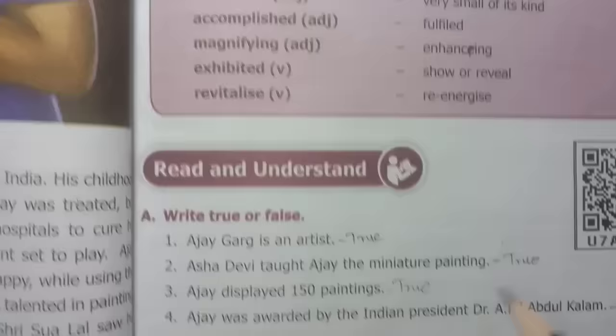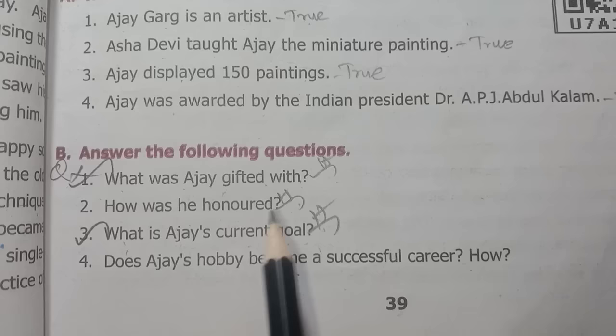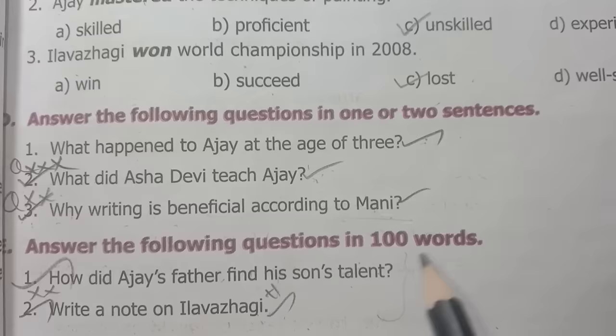Unit 2 Prose: Will Turn into Successful Career. In page number 37, choose the correct answer. In page number 39: What was Ajay gifted with? — half-yearly. How was he honored? What is Ajay's current goal? — three questions, half-yearly question paper.